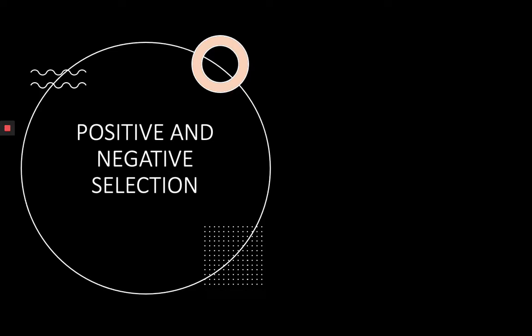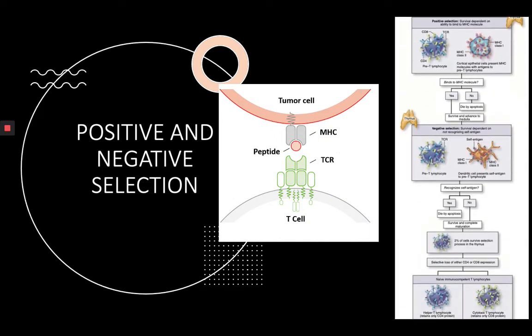Before explaining positive and negative selection, a few words about MHC proteins. All body cells except red blood cells have class 1 MHC proteins on their surface — MHC stands for major histocompatibility complex and is part of the extracellular matrix. Class 2 MHC molecules are found on special antigen-presenting cells such as macrophages. Cells need MHC proteins in order to present their own antigens on the surface.